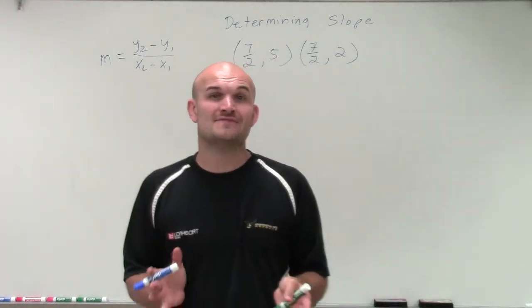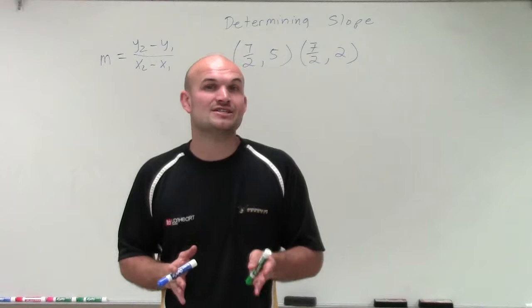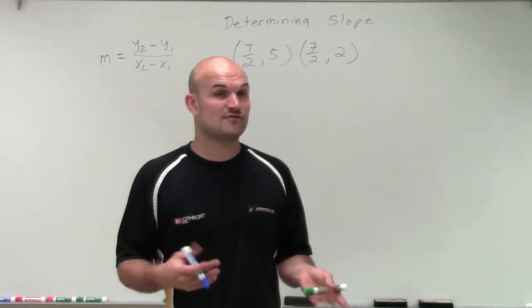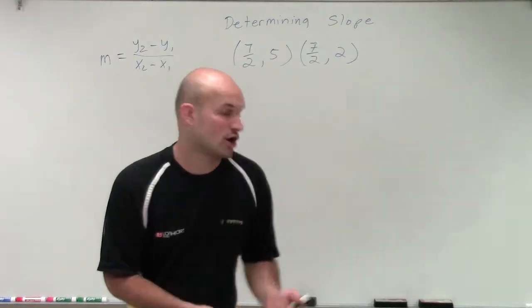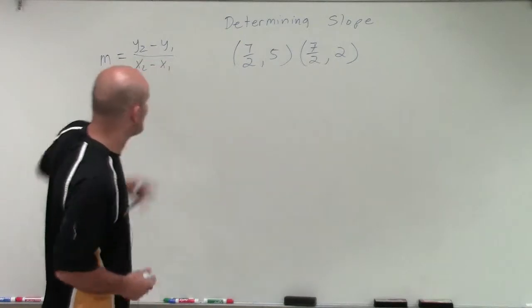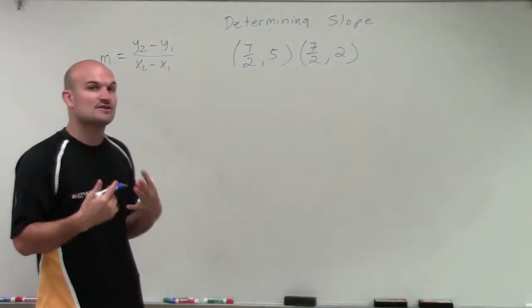And when we looked at graphs, we know that when we didn't have a change horizontally or didn't have a change vertically, we either had a slope of 0 or undefined. But let's just go and apply the slope formula so we can see how this really is going to affect it.